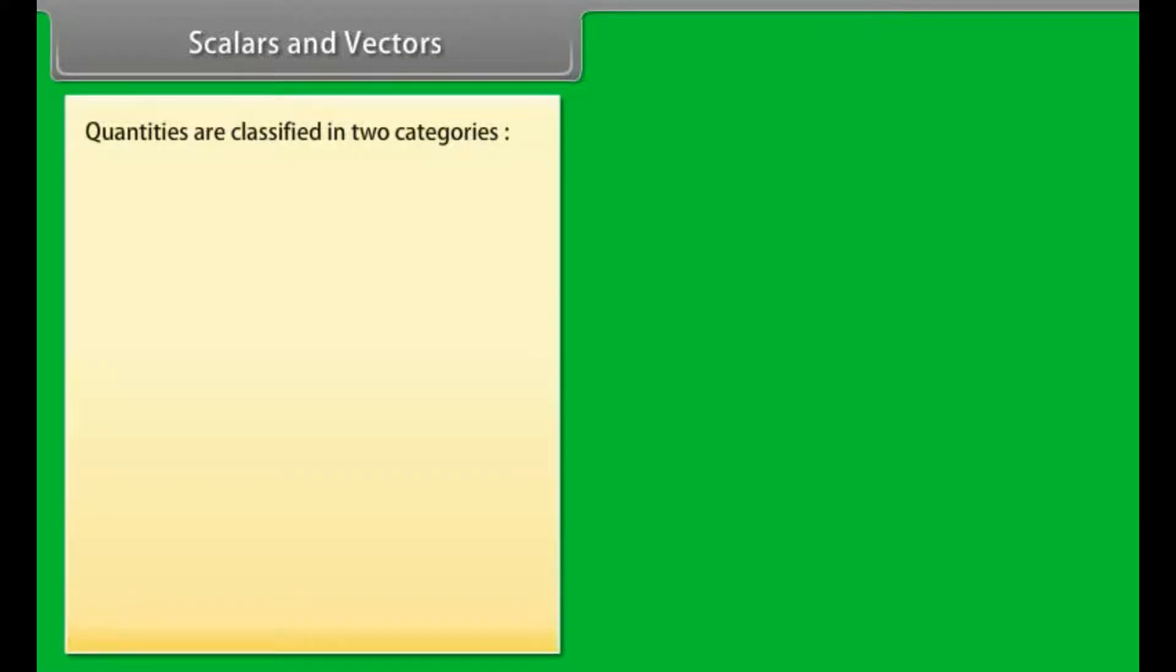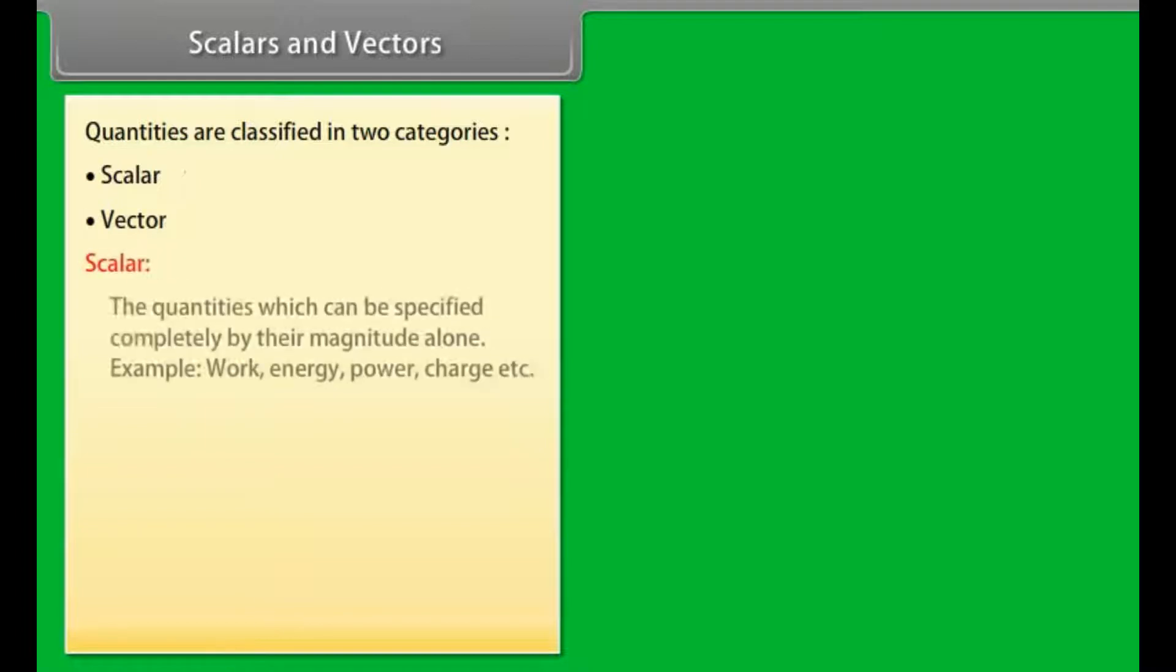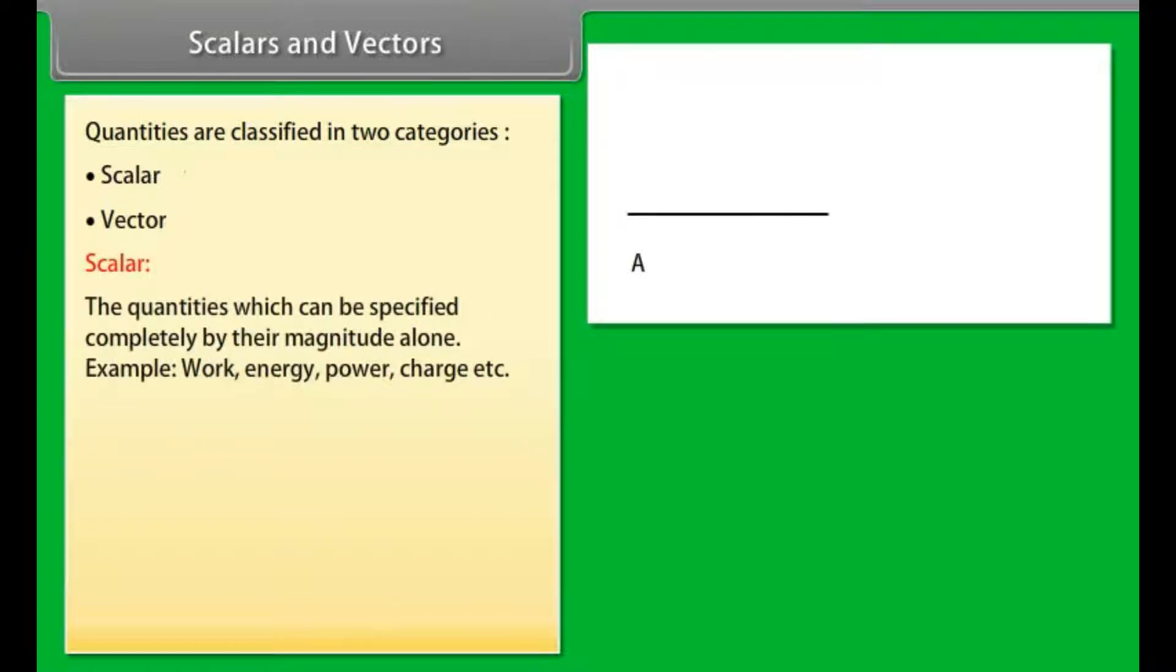Scalars and vectors. In physics, quantities are classified in two categories: A. Scalar and B. Vector. Scalar: The quantities which can be specified completely by their magnitude alone. For example, work, energy, power, charge, etc.